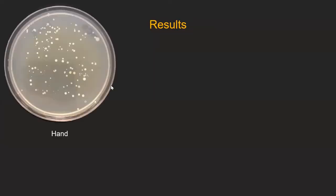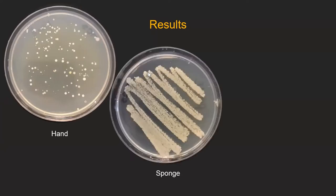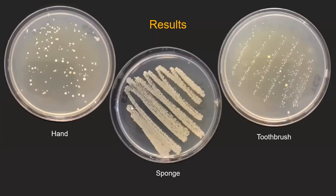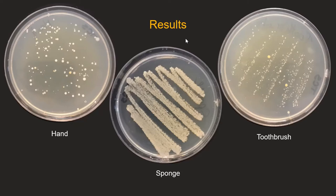Here are the results: my hand, the sponge, and the toothbrush. The dish sponge is the one thing that consistently grosses me out — I refuse to touch one with my bare hands. Looking at the hand plate, a lot of that is going to be Staphylococcus. If you look carefully there are slightly different shades, suggesting two or three different species. My plan for the next lecture is to Gram stain some of these.